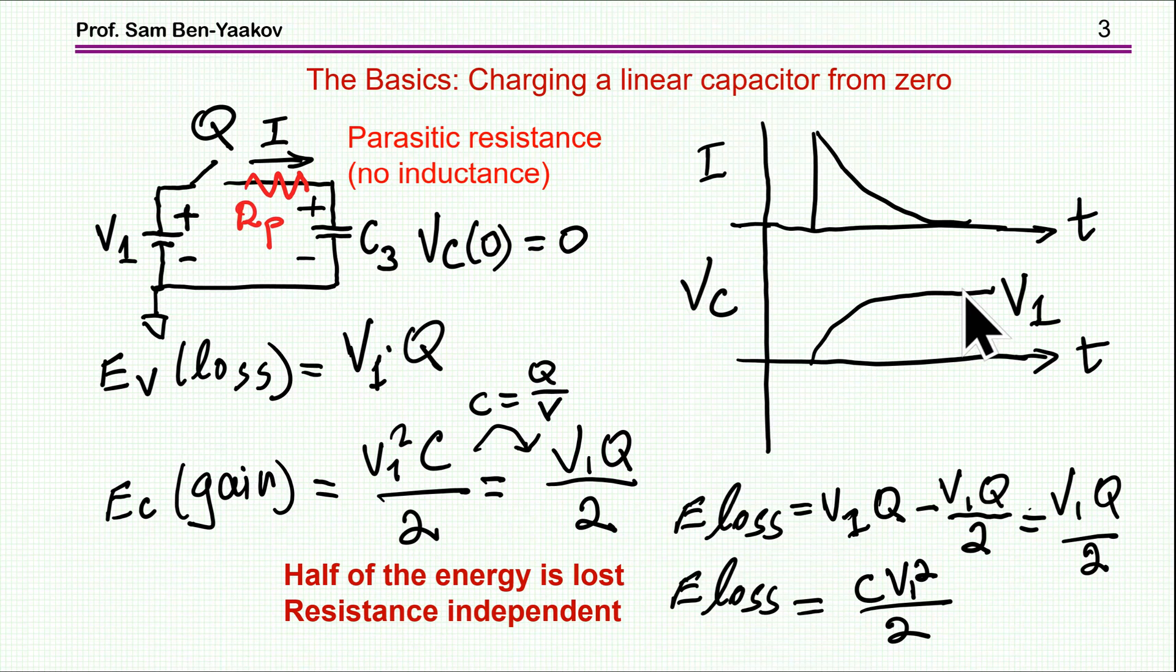I'm assuming this process goes to completion—that is, eventually the capacitor will be charged to V1. Now from energy and conservation of charge, we can say the following: The energy that the source delivered is V1·Q. The energy gained by the capacitor is V1² times C/2, which can be translated as V1·Q/2 using the capacitance relationship for a linear capacitor. Subtracting the gain from the loss, we see a net loss of C·V1²/2. That is, half of the energy is lost—it's converted to heat in the resistance. I'm assuming no inductance and ideal components.